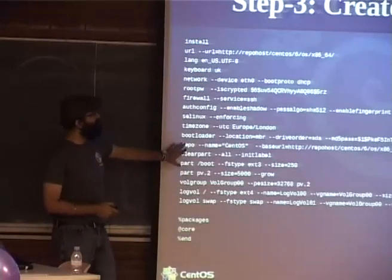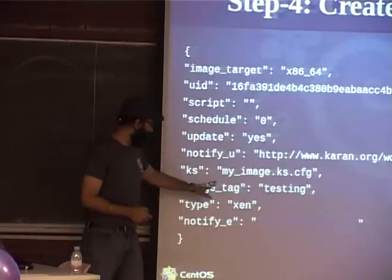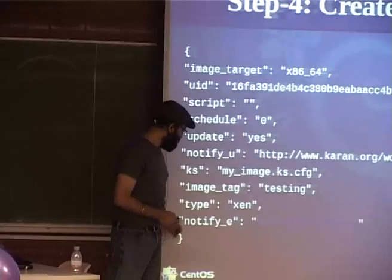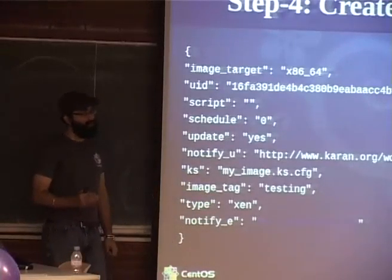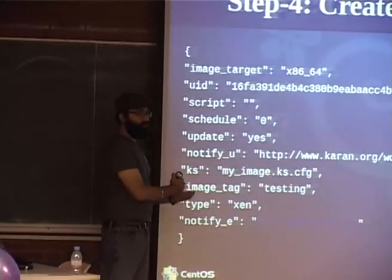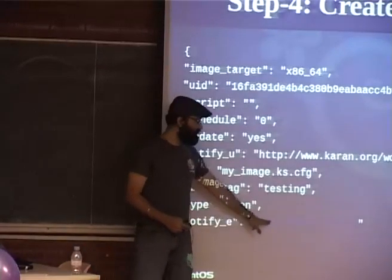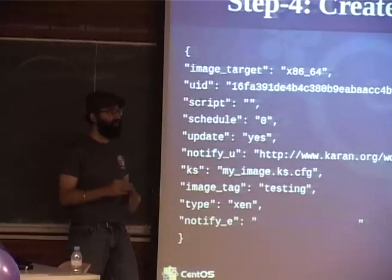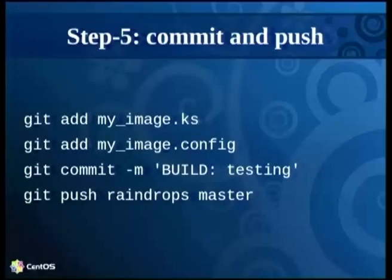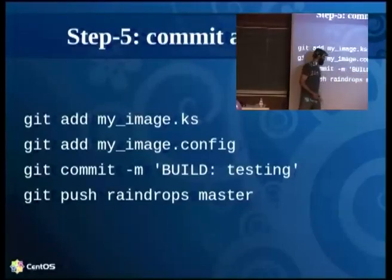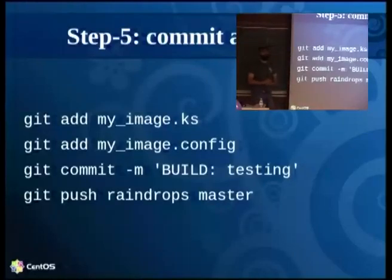The kickstart filename in the config has to match the name you've given it. You have an image tag, a hypervisor target, and a notify field — which can be an email address or a URL for callbacks. So if you're automating your scripts, you can have a URL here, and when the image is done, it will do a callback with details. Using the git interface, you do 'git add' your kickstart and config, 'git commit' with 'build:' prefix, and 'git push' — that triggers the build.